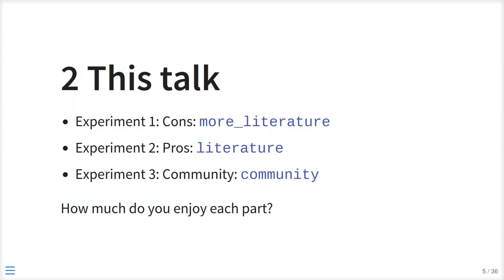In this talk, there will be three little experiments. First I'm going to talk about the cons, then the pros, and then about the community. They have variables, and the values in those variables represent how much you enjoy that part. If you have the time to observe how much you enjoy this, I'll be using it later.